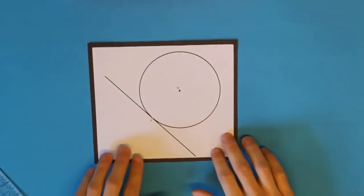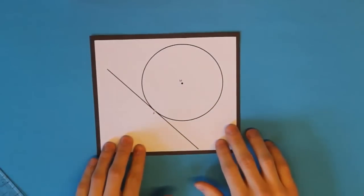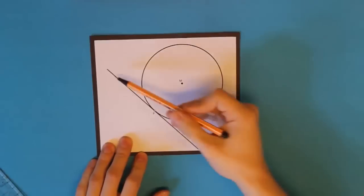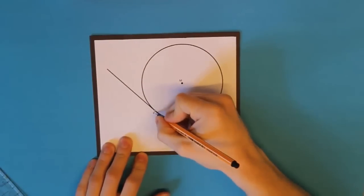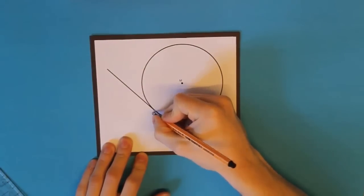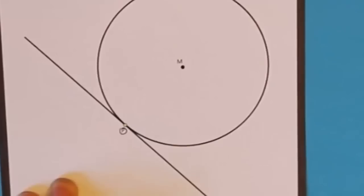Und als letztes haben wir noch eine ganz spezielle Gerade. Ihr sehen könnt, hat diese Gerade genau einen Punkt mit dem Kreis gemeinsam. Und wenn ihr genau hin seht, dann erkennt ihr, dass diese Gerade den Kreis nicht schneidet, sondern an diesem Punkt berührt.